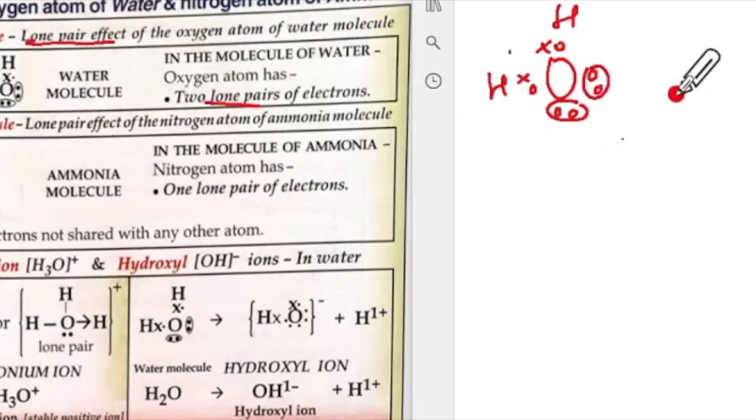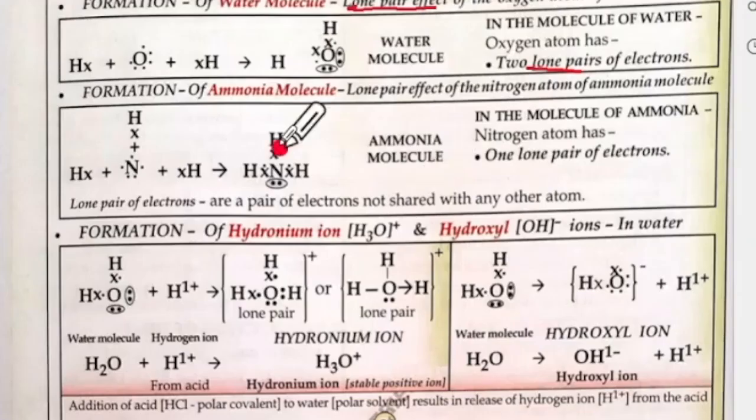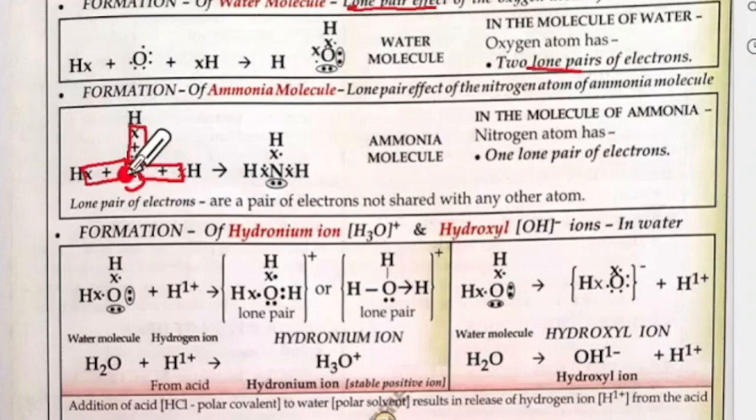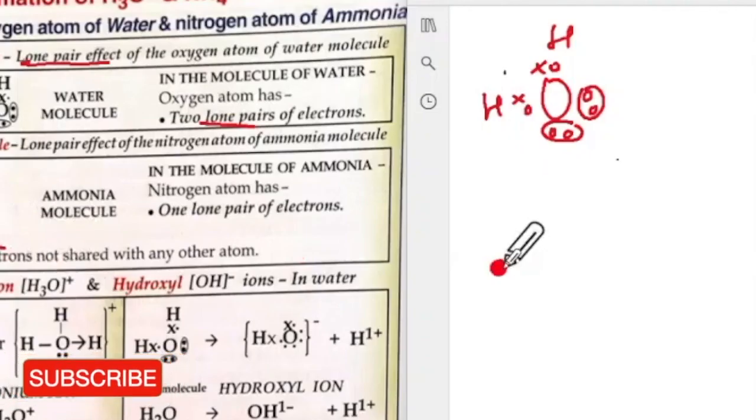Now what are lone pairs? The lone pairs are the pair of electrons which are not yet shared with any other atom. Now look at your ammonia, can you see this ammonia? We already seen the structure, you know that this will get paired up like this and like this.